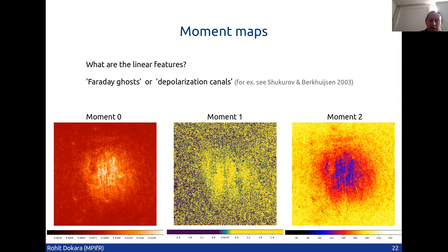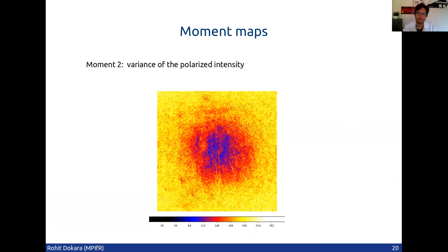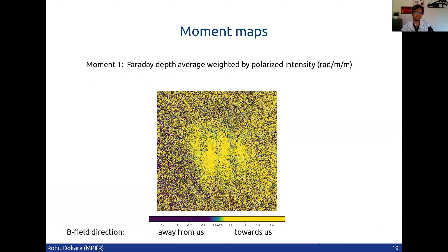Another question: is there a limit in the density of the ISM where you can do these kinds of studies — what is the range of ISM density where you can apply these diagnostics? I'm not sure. The moment one map will tell us about the magnetic field direction, but beyond that I don't know.